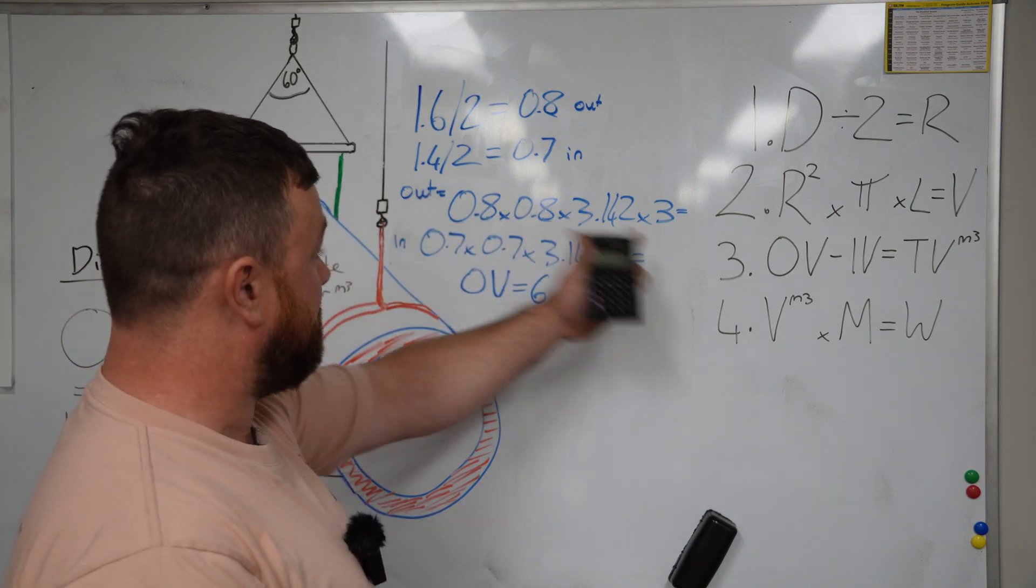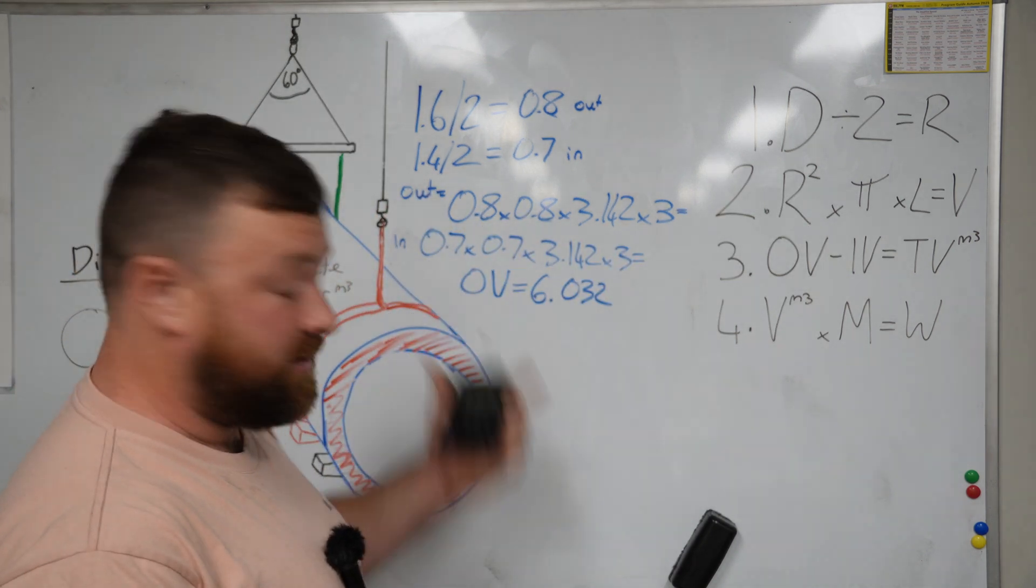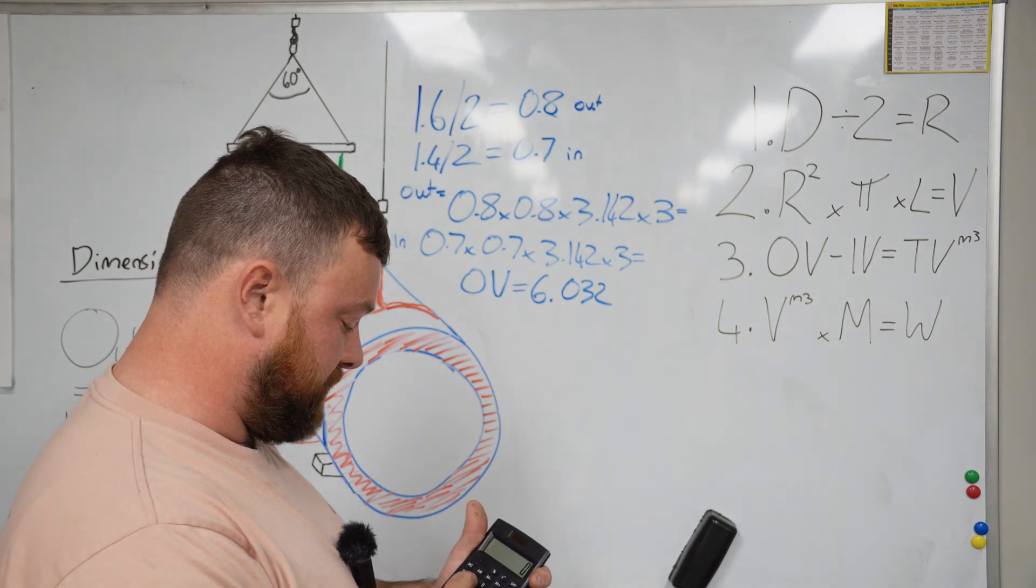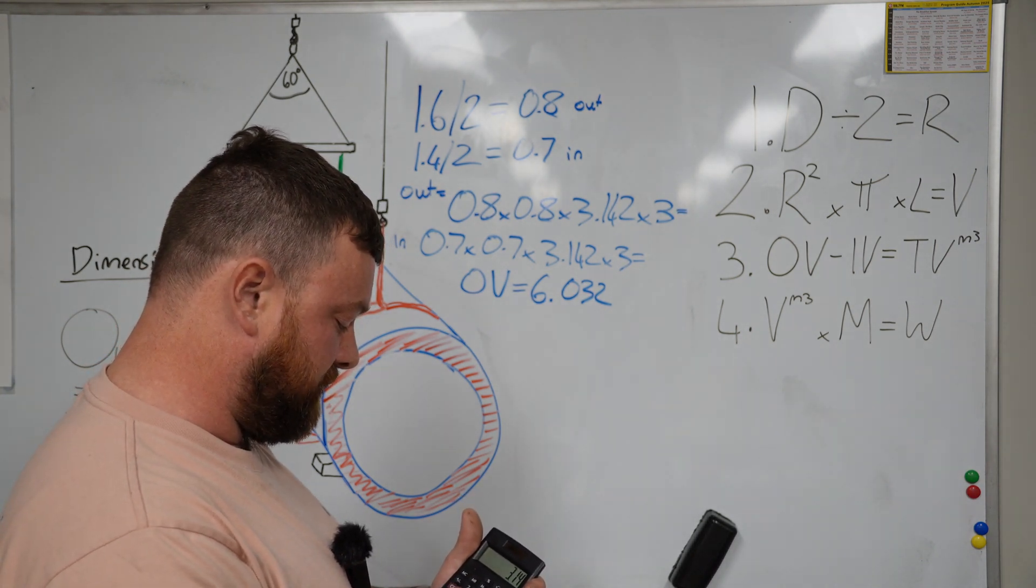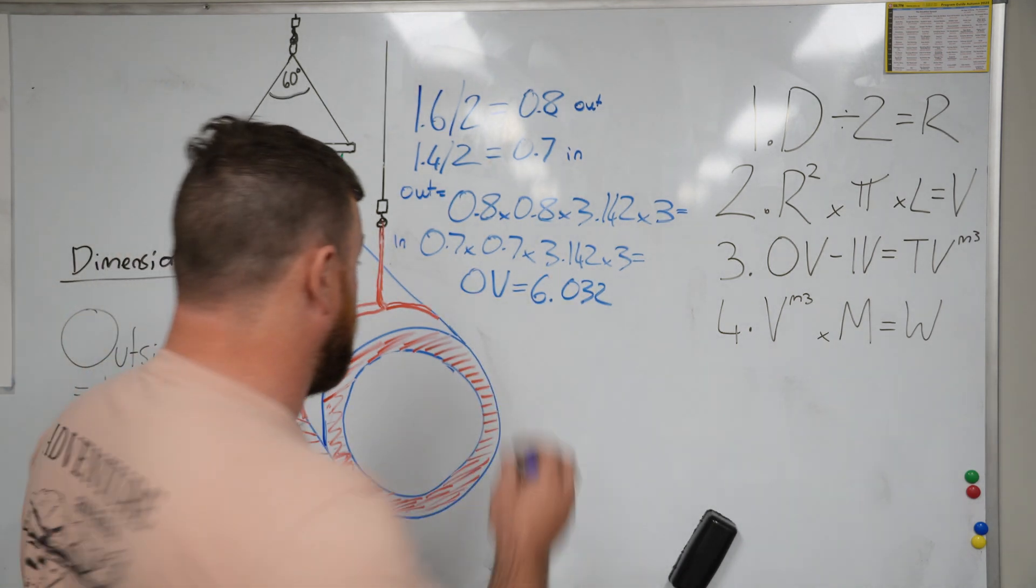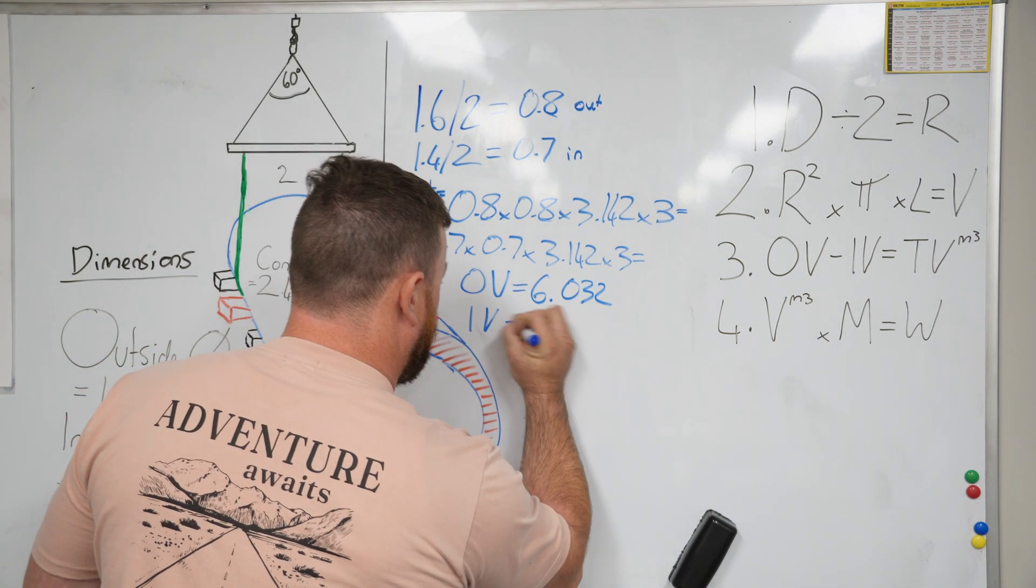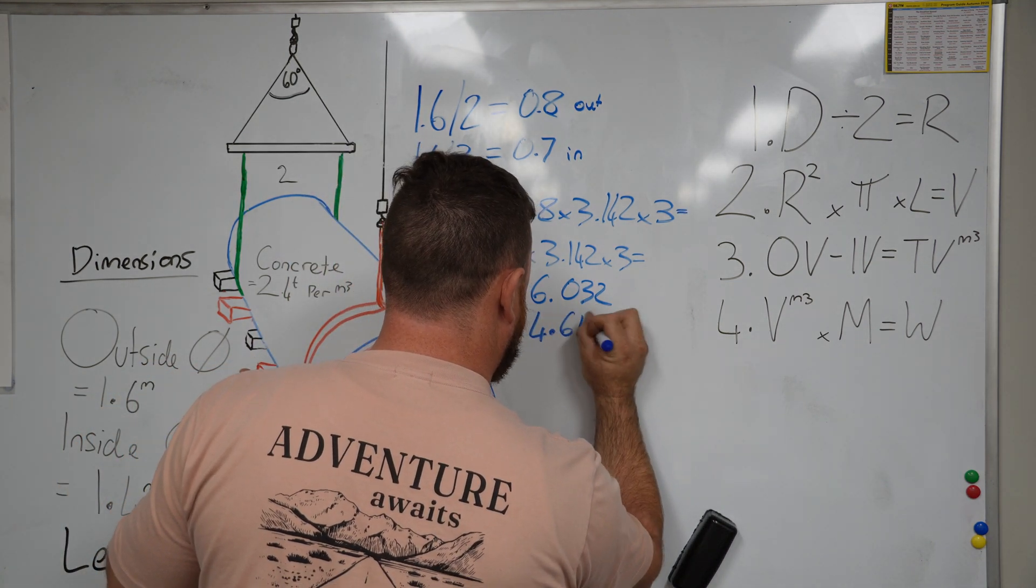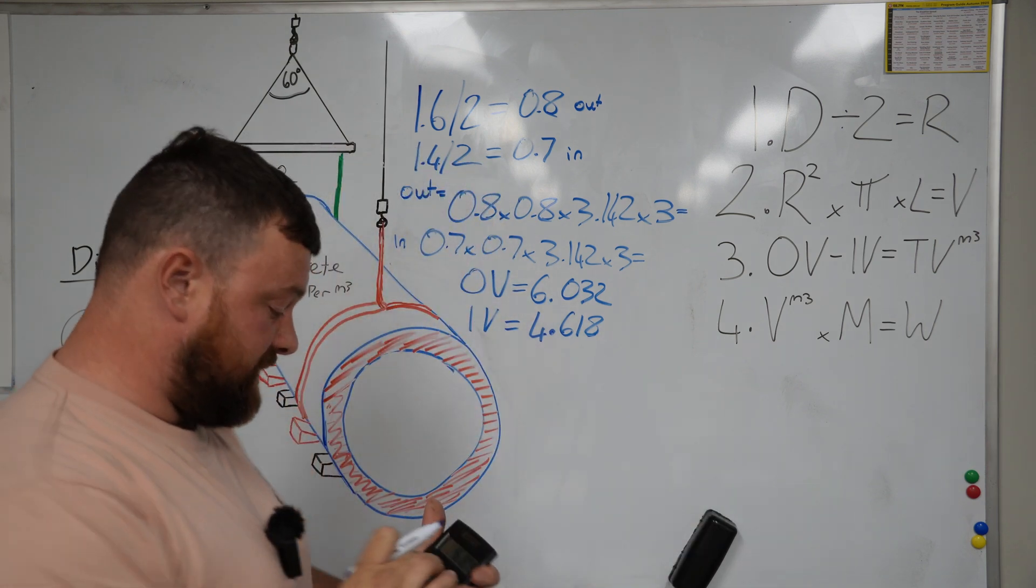All right, now let's find out what our inside volume is. Let's do the same thing again but for our inside dimension: 0.7 times 0.7 times pi, 3.142, times length of 3 meters equals 4.618. Inside volume equals 4.618. Again, don't round these numbers.